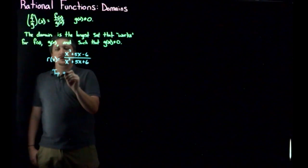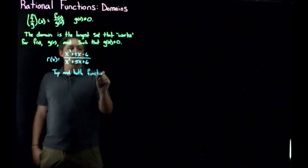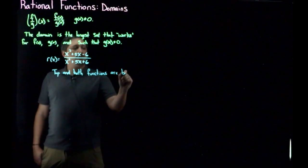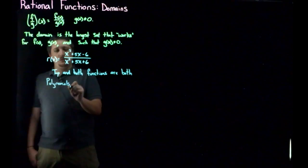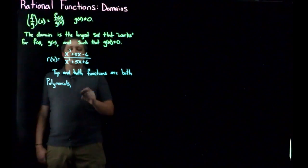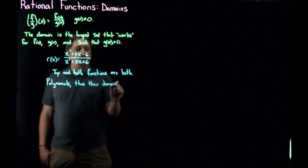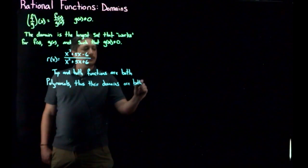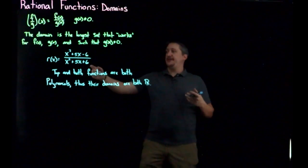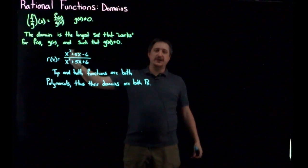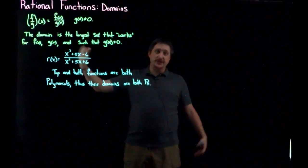But the top and bottom, meaning the numerator and denominator functions, are both polynomials. So since they're both polynomials, their domains are both all real numbers. But that's them independently. I'm saying that you can plug any number into this top function, x squared plus 5x minus 6, and it'll work. You can plug any number you want in the bottom, and the bottom you can calculate.